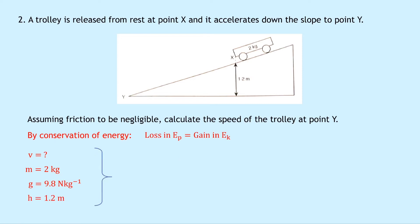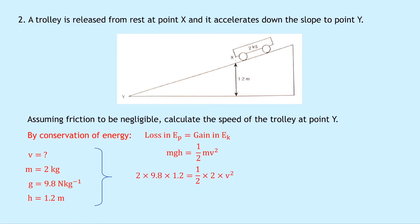We can then equate our two expressions: mgh equals a half mv squared — one for gravitational potential energy and one for kinetic energy. Substituting in the numbers, 2 times 9.8 times 1.2 equals a half times 2 times v squared. A half times 2 becomes 1, so this simplifies to v squared equals 23.52. Square rooting both sides, we end up with v equals 4.8 meters per second.